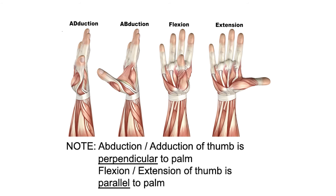The thumb is a little different. For thumb abduction and adduction, the thumb moves perpendicular to the palm. When the thumb is adducted it comes back towards the palm, while abduction brings it away from the palm. The thumb comes across and parallel to the palm for flexion, and parallel to the palm in the opposite direction for extension.